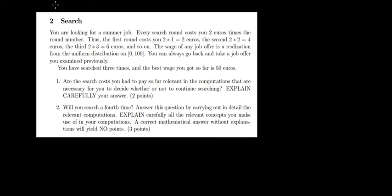Let's have a look at question 2 in this video. We're looking for a job. Every search costs us 2 euros times the round number. So that would be 2 times 1 for the first round, 2 times 2 for the second round, 2 times 3 and so on. The wage is distributed on 0 to 100 euros. We have searched 3 times so far and the best wage we found is 50 euros.